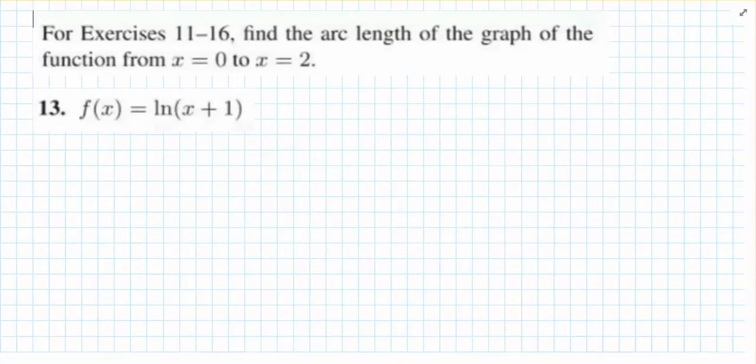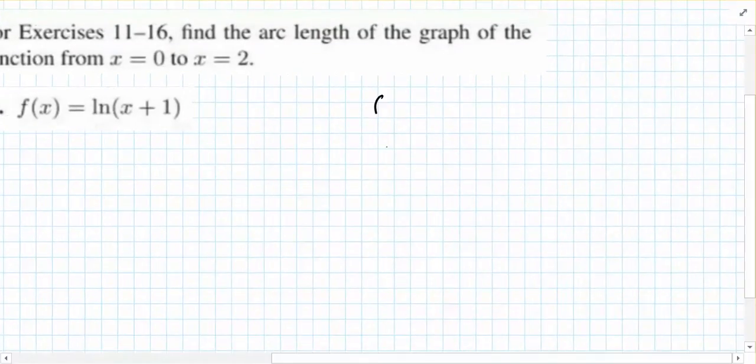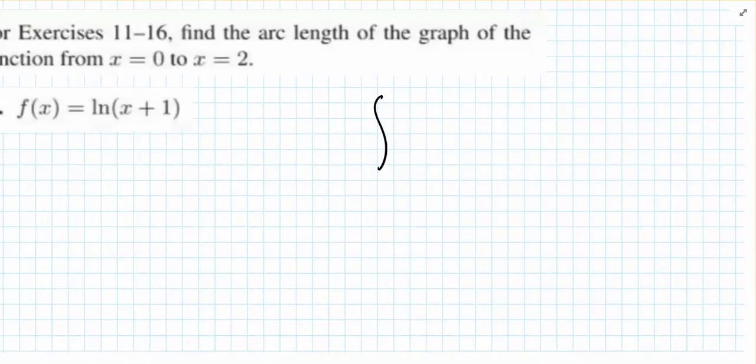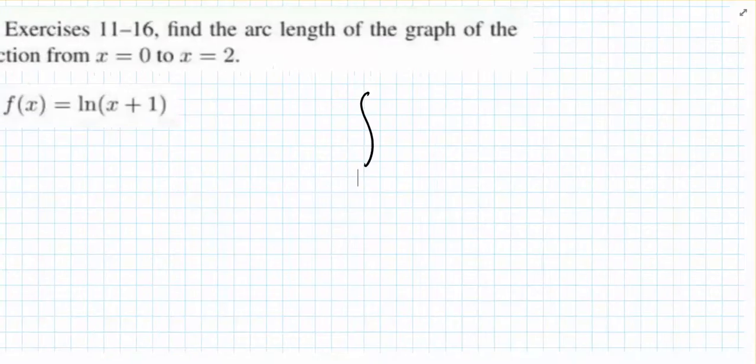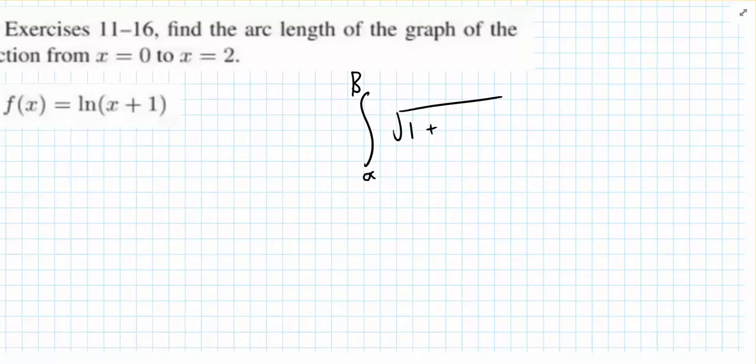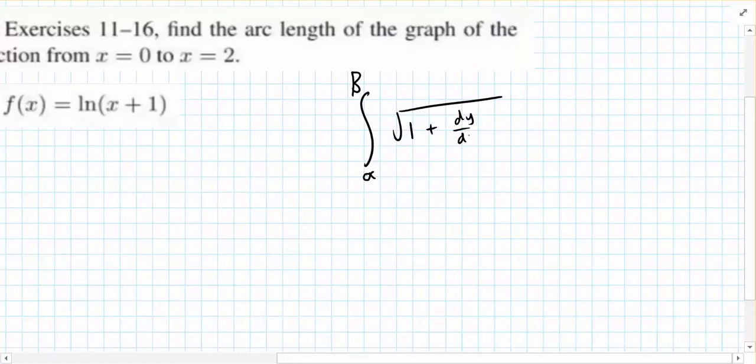So how we're going to do this, I'm just going to write it over here, is we're going to use the equation to find the arc length of a curve. So that's the integral from one limit, we'll call that alpha, to the next, which is beta, of the square root of 1 plus dy dx squared dx.